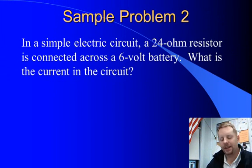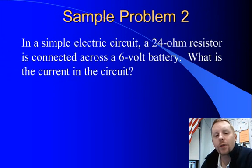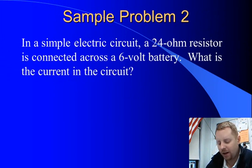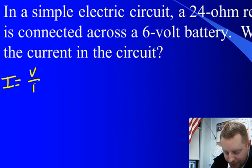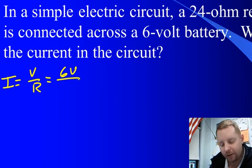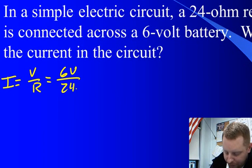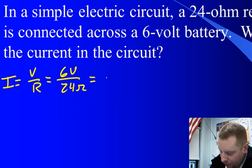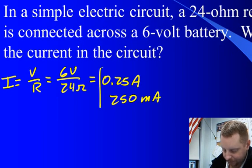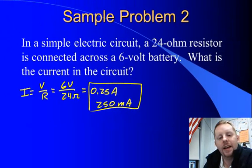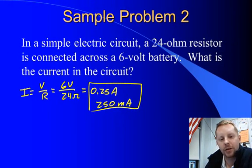If we take another example, in a simple electric circuit, a 24 ohm resistor is connected across a 6 volt battery. What is the current in the circuit? We're looking for current, so current equals potential difference divided by resistance, which is going to be 6 volts substituting in with units, divided by 24 ohms or 0.25 amps or 250 milliamps. Again, another straightforward application of Ohm's law.